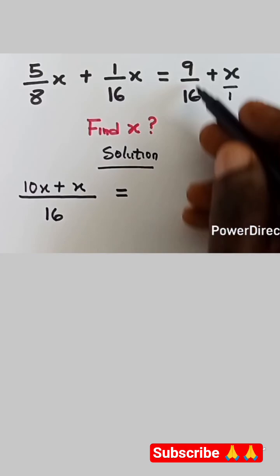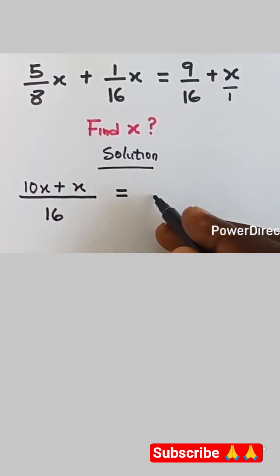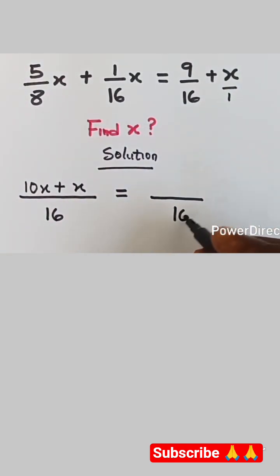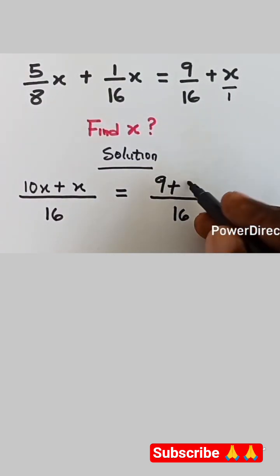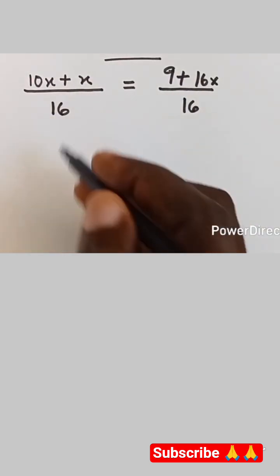We can write this x over 1 as a fraction, just like 9 over 16, and we find the LCM of 16 and 1, which is 16. How many 16 can we see in 16? It's 1 times 9. How many 1 comes in 16? It is 16 times x, so 16x.